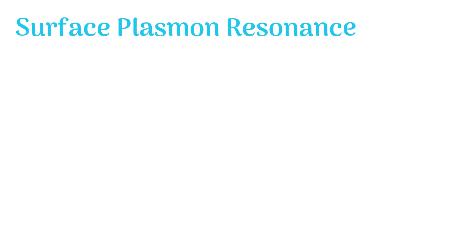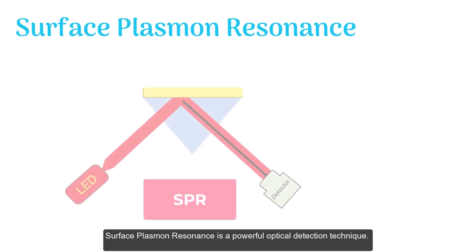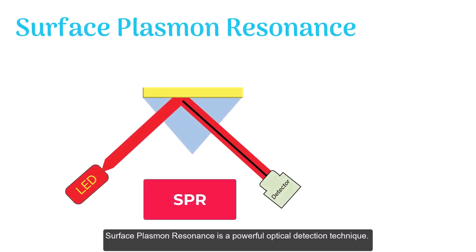Surface plasmon resonance is a powerful optical detection technique. It is mainly used to study the interaction between two or more molecules.